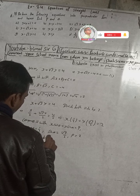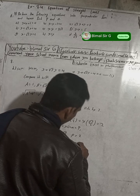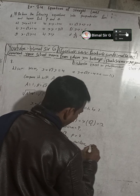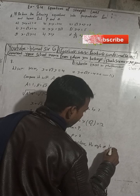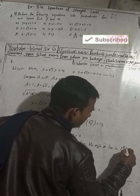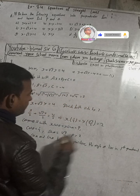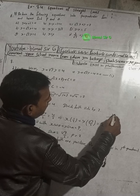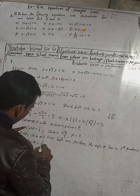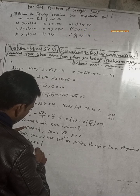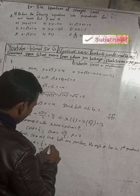Since both cos α and sin α are positive, the angle α lies in the first quadrant. In the first quadrant, we can confirm cos α = 1/2 and sin α = √3/2.